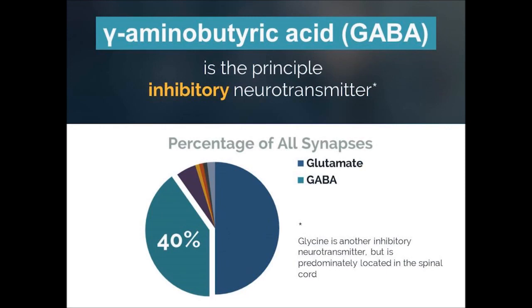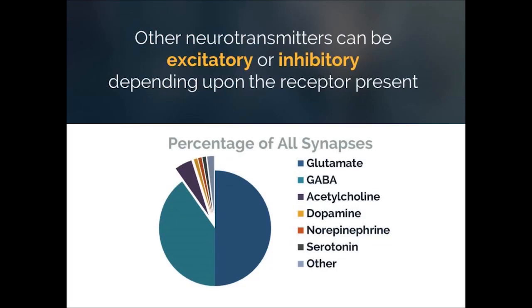Gamma-aminobutyric acid, better known as GABA, is the principal inhibitory neurotransmitter of our brain. GABA is used to communicate at approximately 40% of the synapses in our brain. The remaining synapses use other neurotransmitters, including acetylcholine, dopamine, norepinephrine, serotonin, and others.